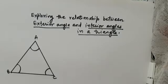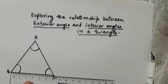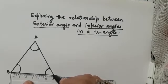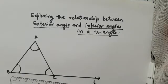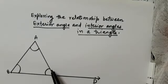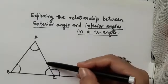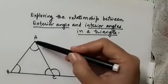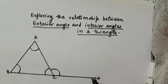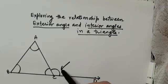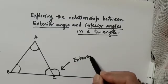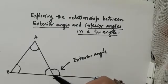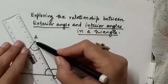To draw the exterior angle, we extend any side of the given triangle. For example, I am extending side BC to point D, so that we get an angle with the adjacent side of the line segment which we have extended. We see here we are getting angle ACD — this angle ACD is the exterior angle.